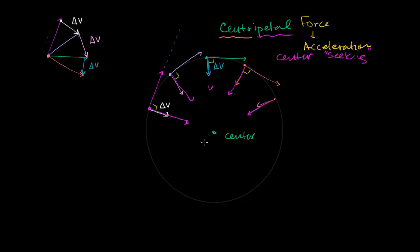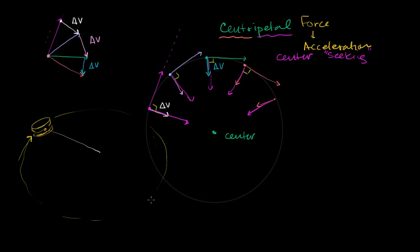Now, where does this happen in everyday life? The most typical example, something most of us have done as kids: if you have a yo-yo and you whip it around on a string, the yo-yo goes in a circle. Even though its speed might be constant — the magnitude of its velocity is constant — the direction of its velocity is constantly changing. What's causing it to go in a circle is your hand pulling on the string and providing tension. So the centripetal force in this yo-yo example is the tension in the string, constantly pulling the yo-yo towards the center.